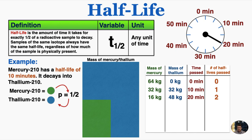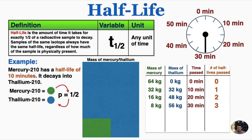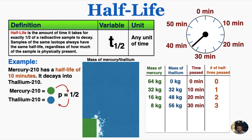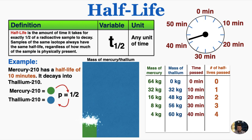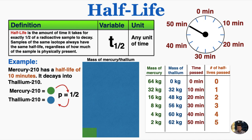And we can keep going and letting time pass. After another 10 minutes, another half of the sample will decay, so we're now left with 8 kilograms. And if we do that again, we're now left with 4 kilograms and 60 kilograms of thallium. And we could just go on like this indefinitely and continue to allow more half-lives to pass.